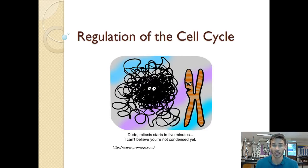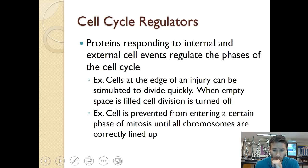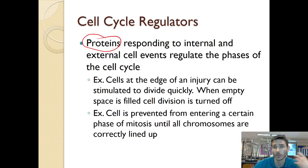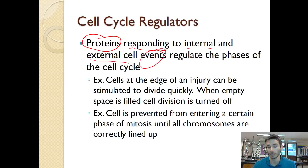Let's start with the general idea of regulating the cell cycle. Looking at this first slide, cell cycle regulators are proteins — just like enzymes and other kinds of proteins — whose job is to regulate when the cell can divide and when it doesn't. These proteins respond to internal and external events; they don't decide randomly. They will go through with cell division or stop it depending on what's going on inside or outside the cell.